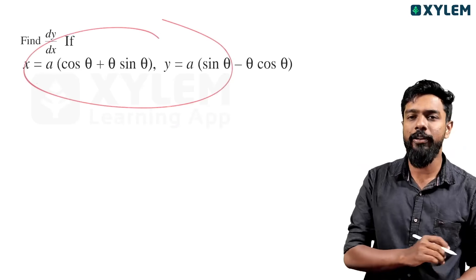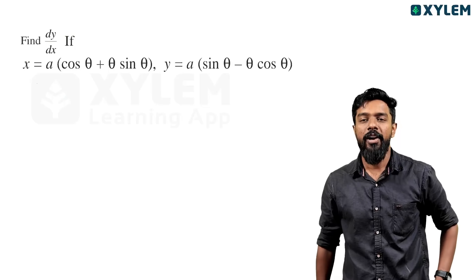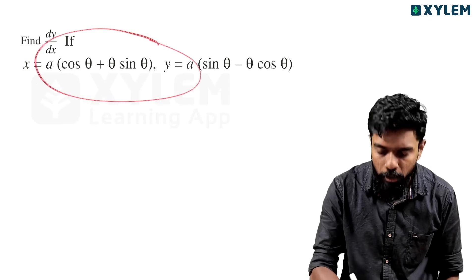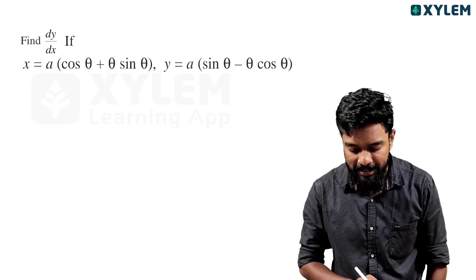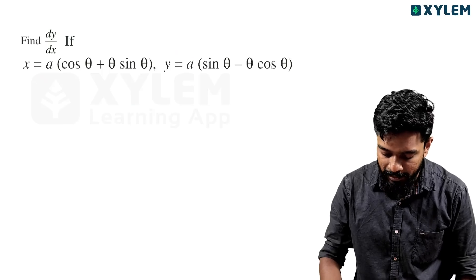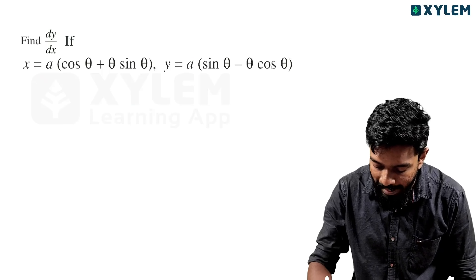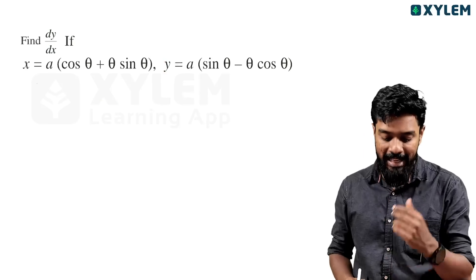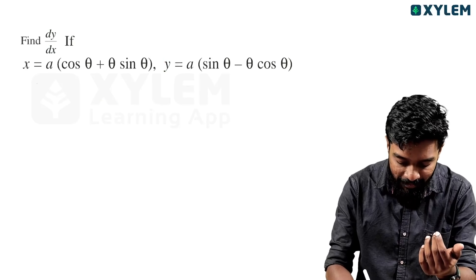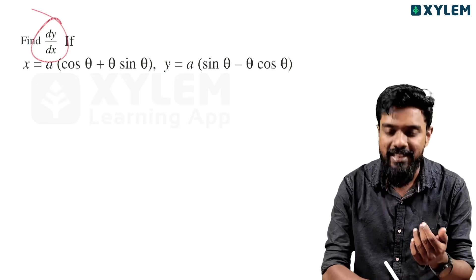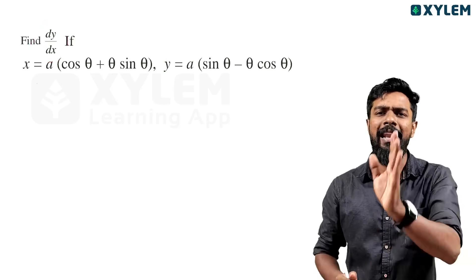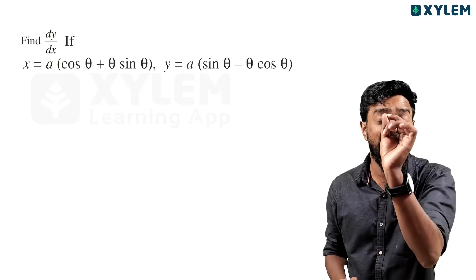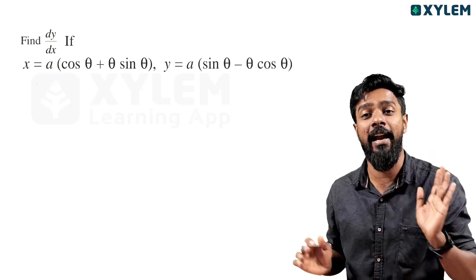Next example: find dy by dx where x equals a into (cosθ + θ sinθ) and y equals a into (sinθ − θ cosθ). We use the same approach: dy by dx equals dy by dθ divided by dx by dθ.